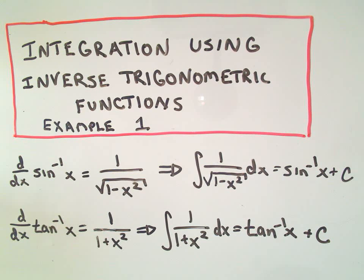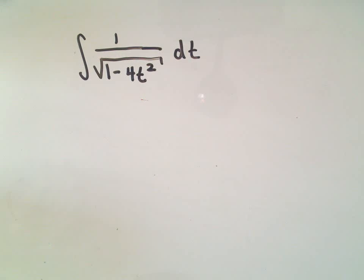And the same thing for arctangent. So, in our first problem here, let's integrate 1 over the square root of 1 minus 4t squared.